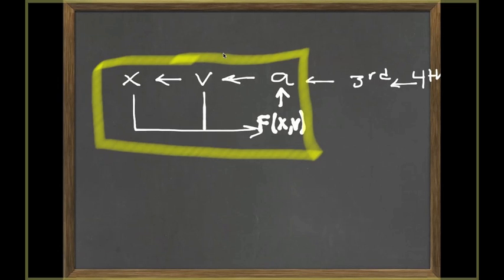Newton's second law comes in by telling us that the force determines the acceleration. If you know the force, you will know the acceleration. And if we know the acceleration, we can figure out the velocity and the position given some initial conditions. Knowing the position and velocity in turn allows us to calculate the force, because the force in general could depend on position and velocity.